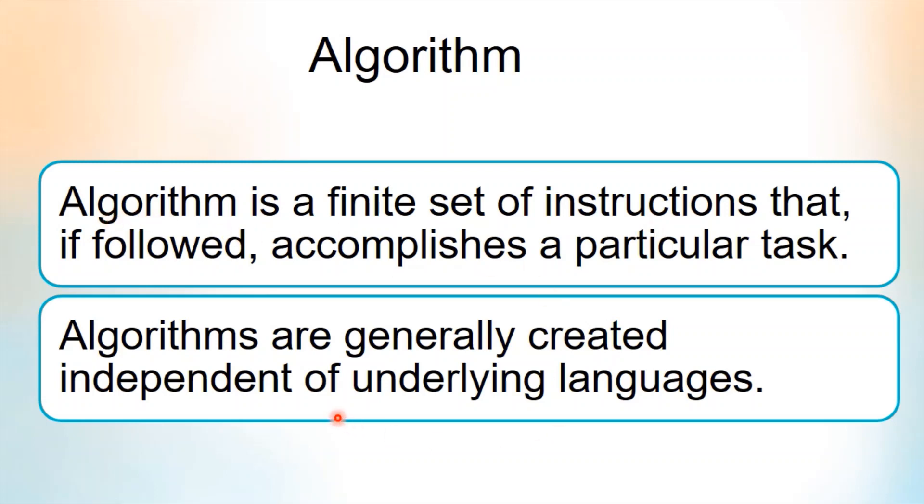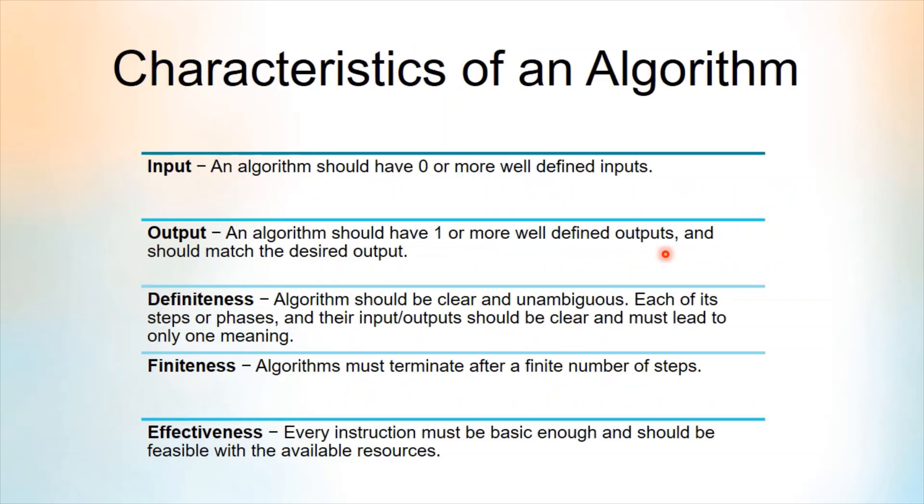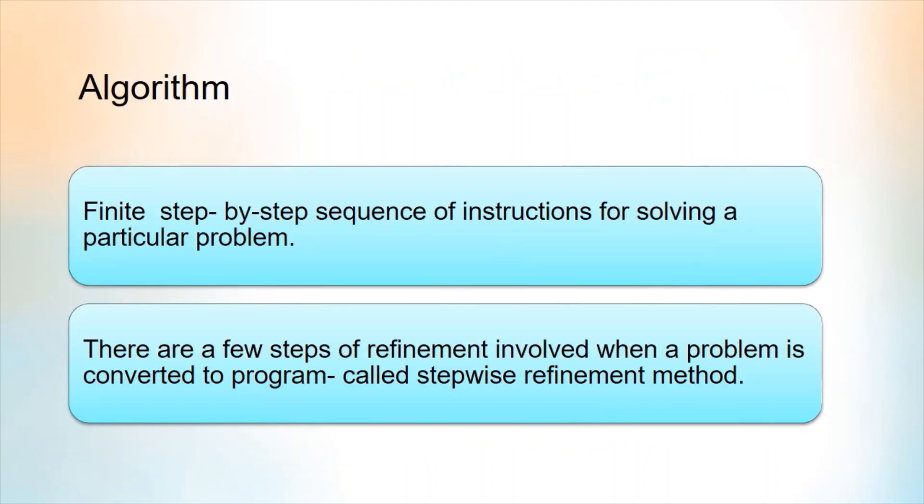Generally speaking, algorithms are independent of any underlying language. Now let us look at the characteristics of an algorithm. The first one is input - an algorithm should have zero or more well-defined inputs. An algorithm should have at least one output. Assume that we have to solve a problem, so what we will do is write an algorithm for that.